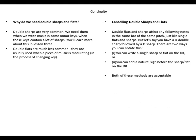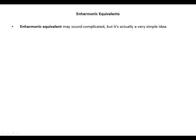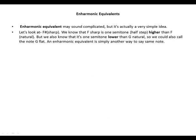Let's now look at enharmonic equivalents. An enharmonic equivalent may sound complicated, but it's a very simple idea. F sharp is one semitone or half step higher than F, but it's also one semitone lower than G natural — so we could also call that note G flat. An enharmonic equivalent is simply another way to say the same note. F sharp and G flat are enharmonic equivalents.